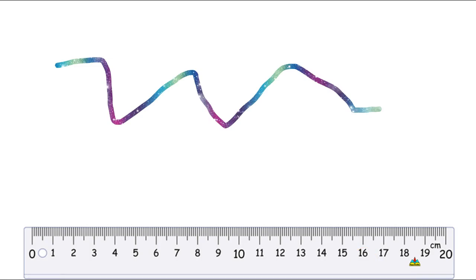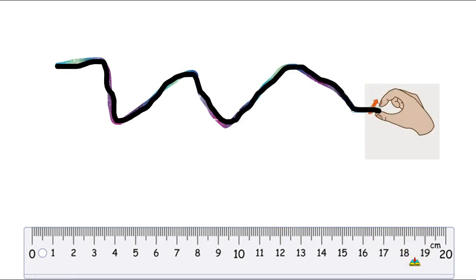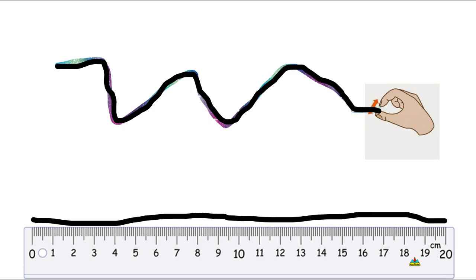All right let's do this next zigzag line. I need to put my string along the zigzag line just like this. There we go. And then I'm going to pinch the end of it so I know where the end is. And then I'm going to match up the end here with the zero and stretch it out along here to see how long this one is. Let's see. Stretch it out here. Now it looks like this string was 20 centimeters long. So I know that this zigzag line is 20 centimeters long.